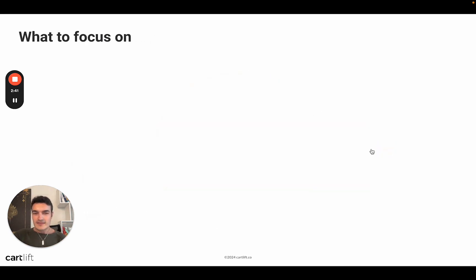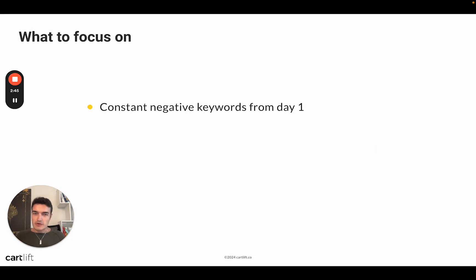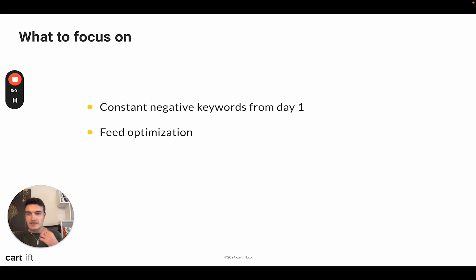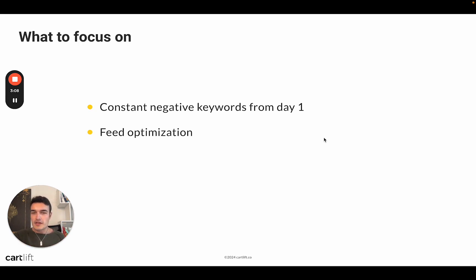When it comes to the classic setup, you should focus on a few things. First, constant negative keyword management from day one. The moment you launch your campaign at, say, $50 a day, you want to review your negative keywords because with that basic setup and that low a budget, you have to do a lot of manual work. You also have to optimize your product feed early on, because with a well-optimized feed you get more clicks and cheaper clicks — which is super important when you are on a low budget.